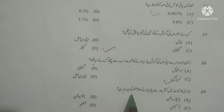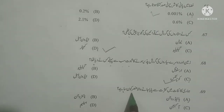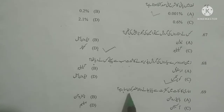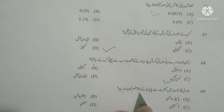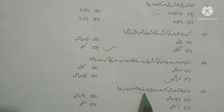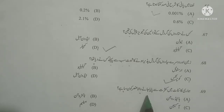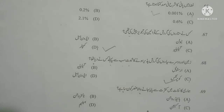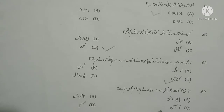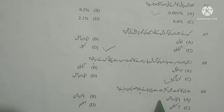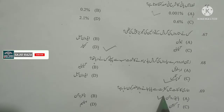Next question: Humari kainat mein kasrat se paaya jane wala ansur koun sa hai? Here ansur means element. What is the most abundant element in our universe? As you know, the most abundant element in the universe is hydrogen. Options given are hydrogen, nitrogen, oxygen, helium — hydrogen is correct.